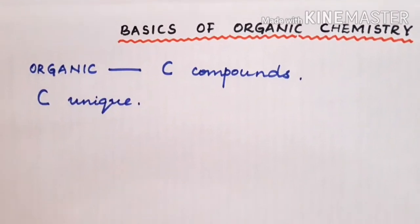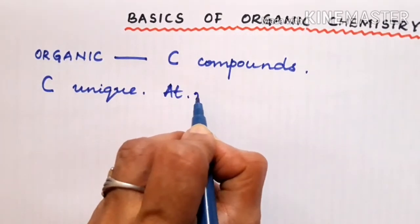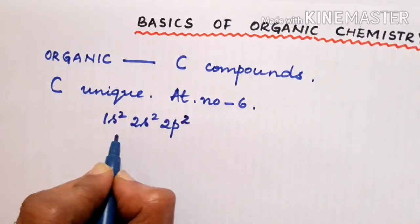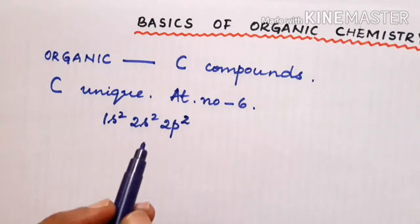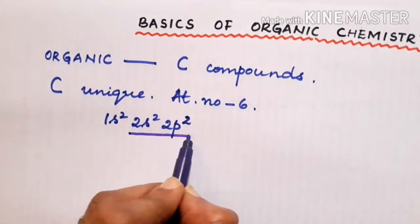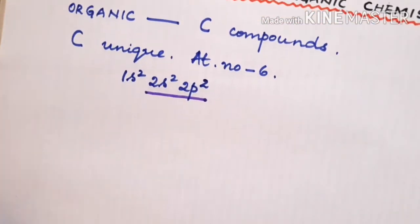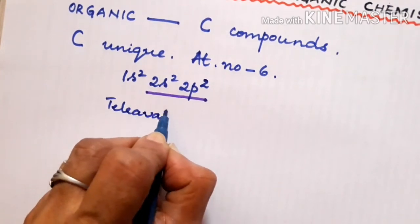You find that carbon has the atomic number 6 with the configuration 1s² 2s² 2p². So, the valence electrons become 4 and so we say that carbon is tetravalent in nature.